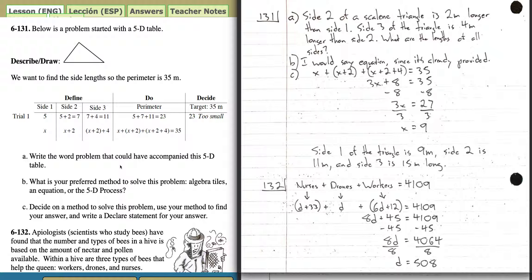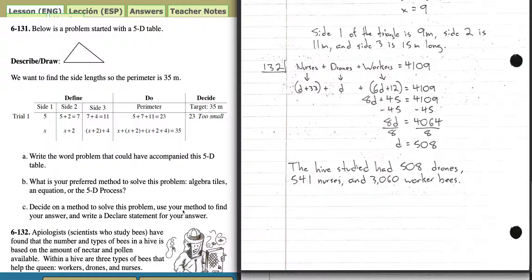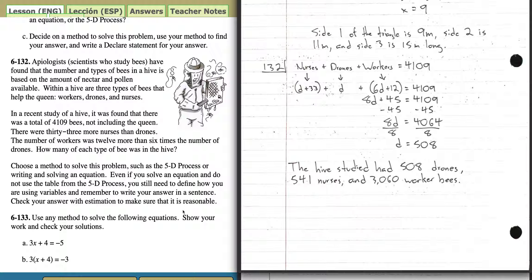So I just copied this down over here. I simplified: x plus x plus x would be 3x. 2 plus 2 plus 4 is 8. Subtract 8 from both sides, so these cancel out. 3x equals 27, because 35 minus 8 is 27. Divide both sides by 3. x is 9. That means that x was side 1 over here. So side 1 of the triangle is 9 meters. Side 2 is 11 meters, because you're adding 2. And side 3 is 15 meters long, because you're adding 6.